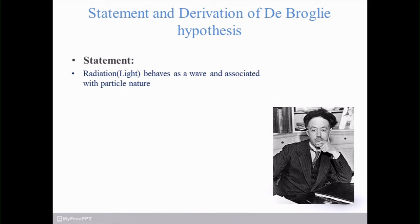There are some statements and derivations of the de Broglie hypothesis. The statement is: the radiation, that is light, behaves as a wave and is associated with particle nature. So it indicates that radiation — light — acts as a wave as well as a particle.